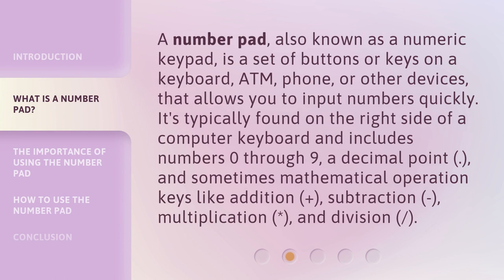A number pad, also known as a numeric keypad, is a set of buttons or keys on a keyboard, ATM, phone, or other devices that allows you to input numbers quickly. It's typically found on the right side of a computer keyboard and includes numbers 0 through 9, a decimal point, and sometimes mathematical operation keys like addition, subtraction, multiplication, and division.